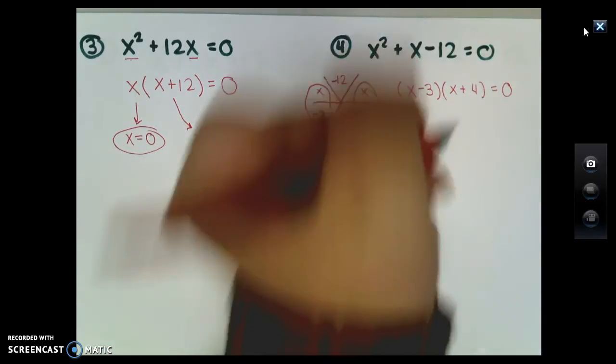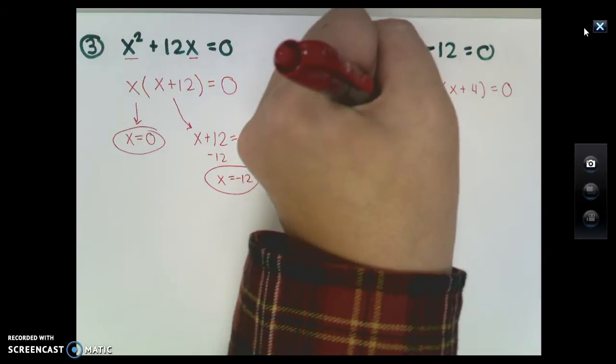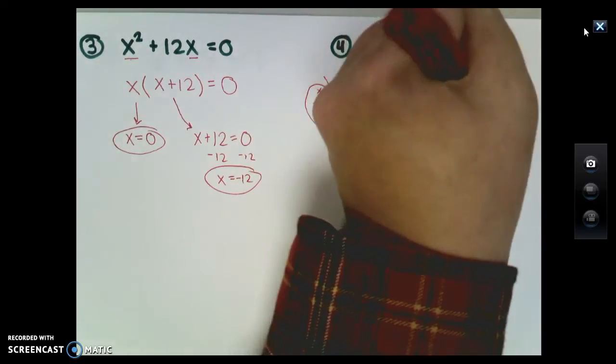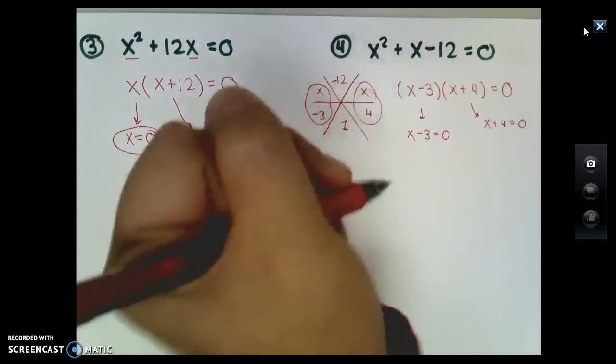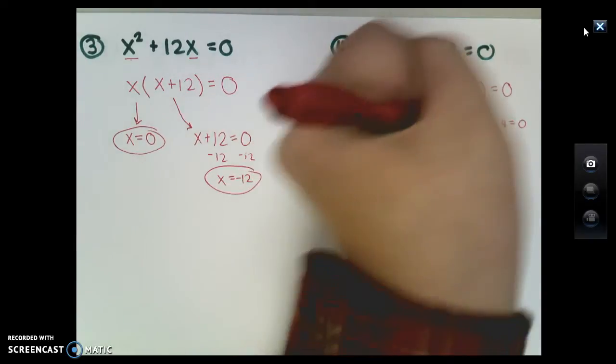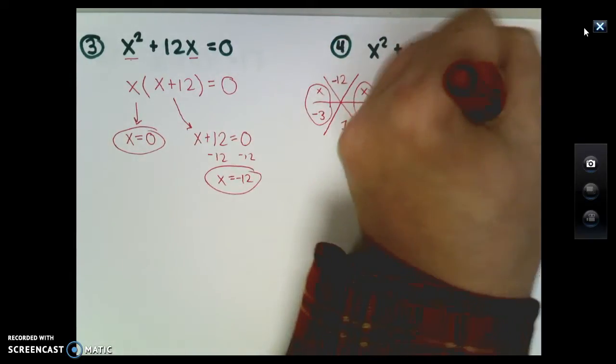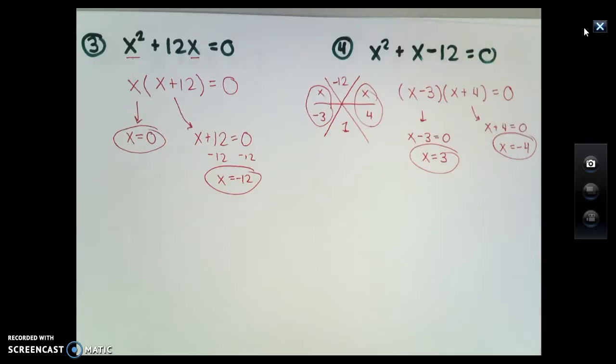Once again, I can set each of these factors equal to 0. So x minus 3 equals 0, x plus 4 equals 0, and we solve each of these. So x equals 3 and x equals negative 4, and those are my two answers.